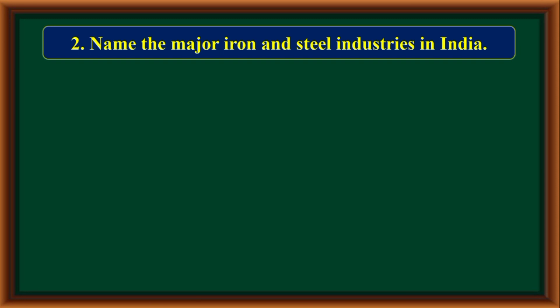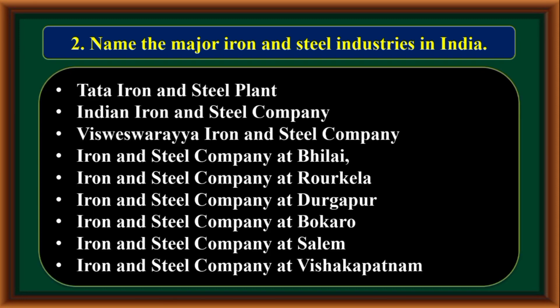Name the major iron and steel industries in India. They are: Tata Iron and Steel Plant, Indian Iron and Steel Company, Vishweshwari Iron and Steel Company, Iron and Steel Company at Bhilai, Iron and Steel Company at Rourkela, Iron and Steel Company at Durgapur, Iron and Steel Company at Bokaro, Iron and Steel Company at Salem, and Iron and Steel Company at Visakhapatnam.